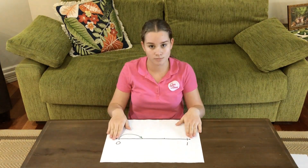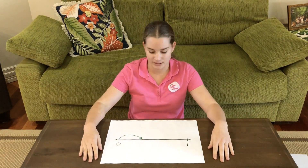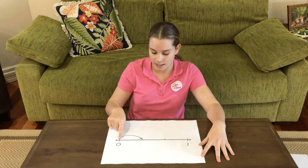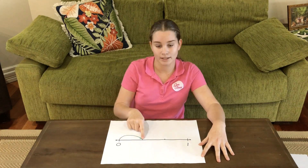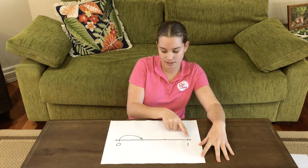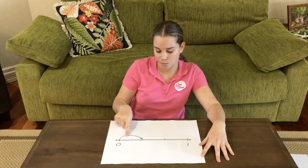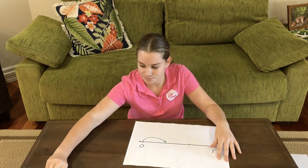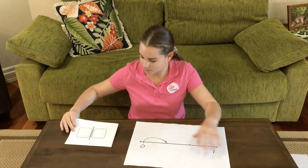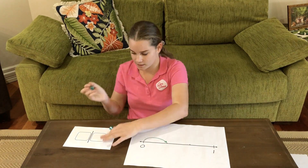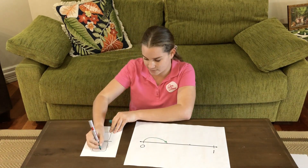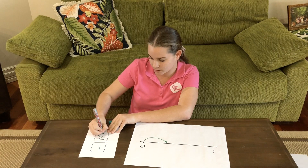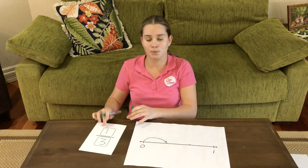This number line is one whole, but what fraction does this represent? This is one third. It's one of three equal jumps — it's one third of the distance.